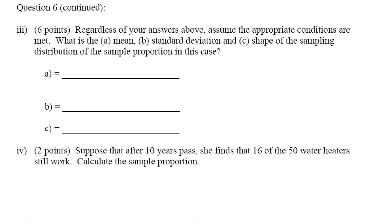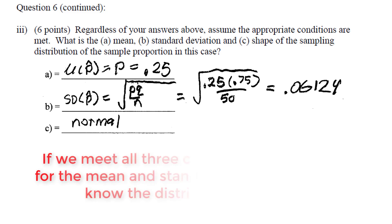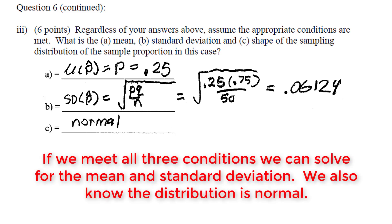Now for part number three, it actually follows that the shape of the distribution will be normal with a mean of P and a standard deviation of P times Q over N square root if we meet all three conditions. So when we figure out what the mean is, well, the mean of the distribution is just P, which is equal to 0.25. Next, we can solve for P times Q over N square root and obtain the standard deviation. Finally, if we meet all three conditions, the shape of the distribution of the sample proportion will be normal.